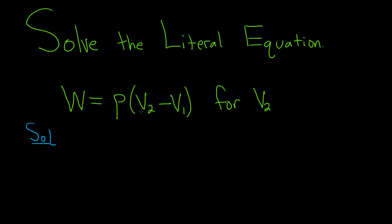So v2 is kind of like trapped inside the parentheses, so we have two choices here. We can distribute the p, or we can actually divide the p. Dividing by p is going to make it much, much easier. So because p is being multiplied by all of the stuff in parentheses — there's a times here — what you can do is just divide both sides by p to get rid of it. This will cancel, and you're basically freeing the v2 from the parentheses.